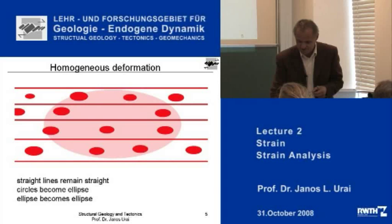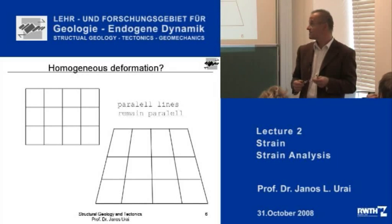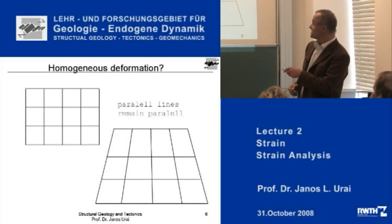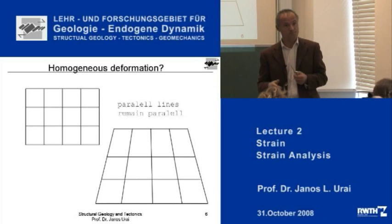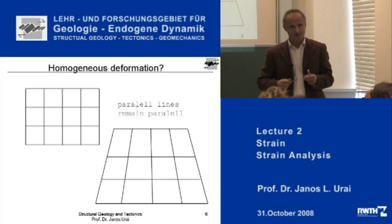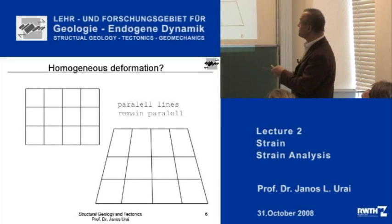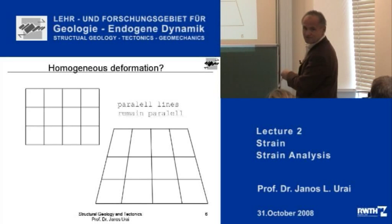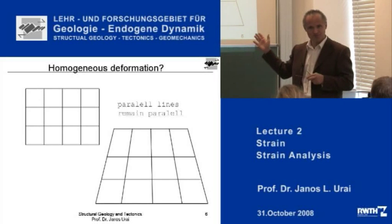Here is the next question — a little bit of a trick invented by my colleague Wyn Means. Here is the original object and it has been deformed. Straight lines remain straight. Is the deformation homogeneous? No, because there is one more very important consideration: parallel lines must also remain parallel. You could see that this is not homogeneously deformed by drawing a line between the diagonals, because that line is actually becoming curved. So not all straight lines remain straight in this diagram.